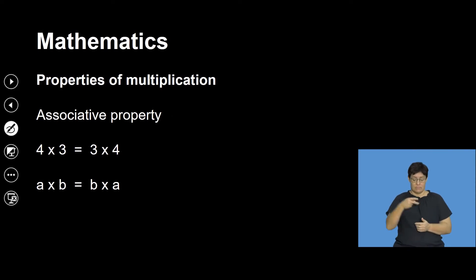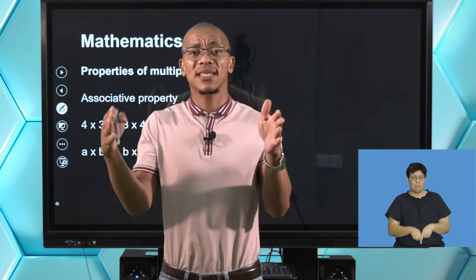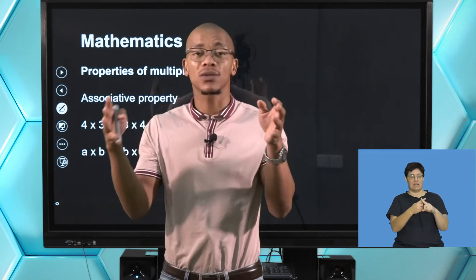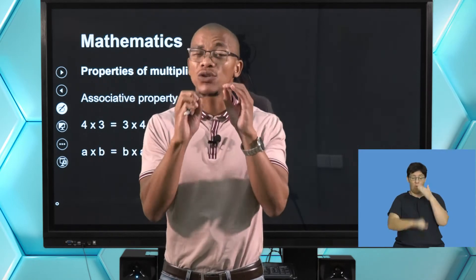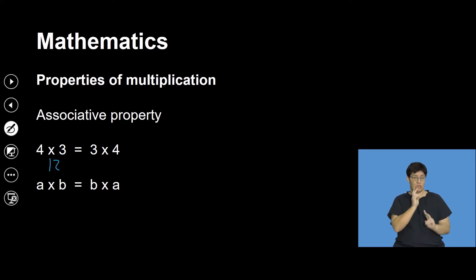We have two properties. The first is the associative property. This means it does not really matter the order of the numbers you are multiplying — if it's 3 times 4, it's the same as 4 times 3. It doesn't matter your order of multiplying, as long as there is multiplication between those terms — not division, not subtraction, just multiplication. 4 multiplied by 3 is 12; 3 multiplied by 4 is also 12.